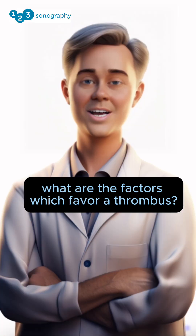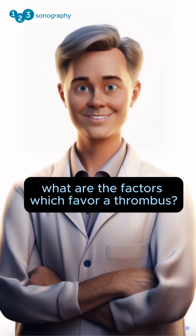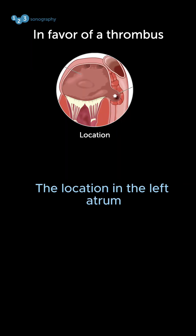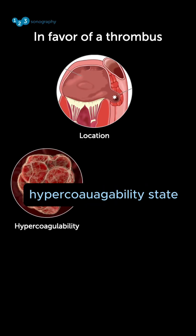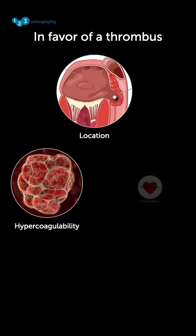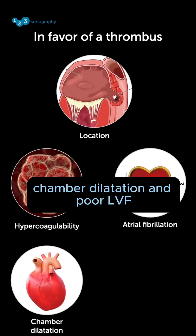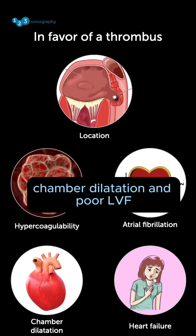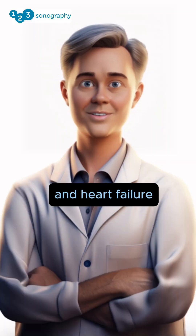In general, what are the factors which favor thrombus? The location in the left atrium, specifically in the left atrial appendage; a hypercoagulability state; atrial fibrillation; and chamber dilatation with poor left ventricular function and heart failure.